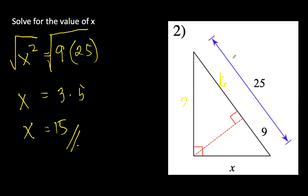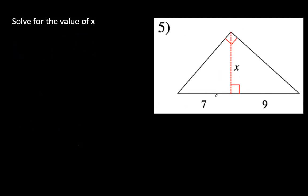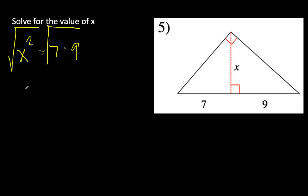In the next problem, we're solving for X which is the altitude, given that the hypotenuse is divided into two parts with measures 7 and 9. Using the formula X squared equals the product of the two segments, X squared equals 7 times 9. Taking the square root on both sides, X equals 3 times the square root of 7 units.